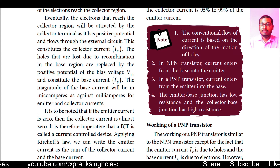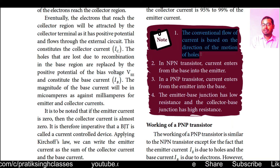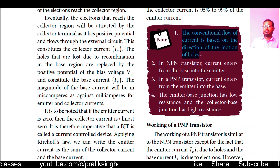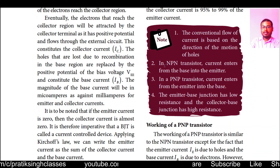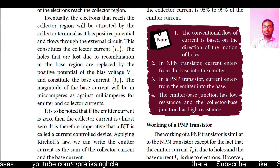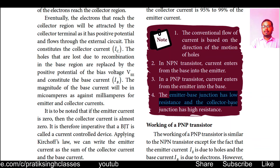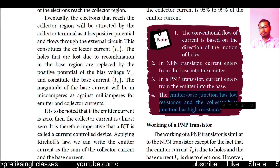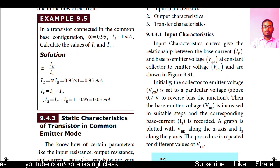The conventional flow of current is based on the direction of motion of charges — opposite to the flow of electrons. In an NPN transistor, current enters from base into the emitter. In a PNP transistor, current enters from emitter into the base. The emitter-base junction has low resistance and the collector-base junction has high resistance — always keep this in mind.